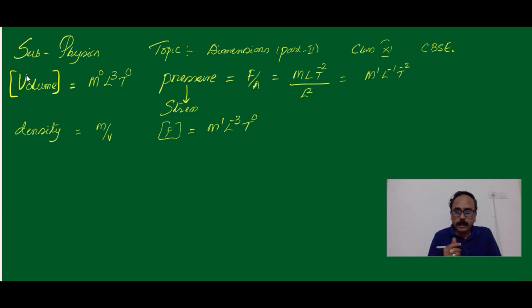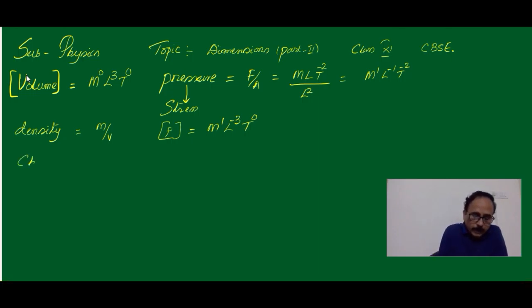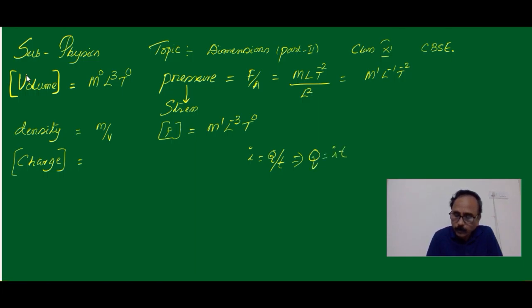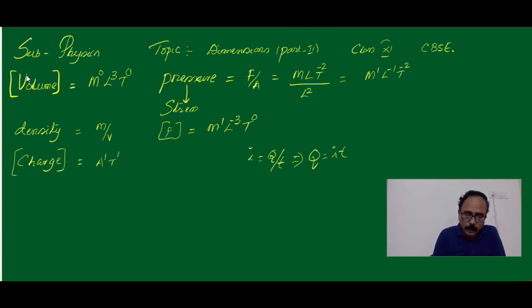Now let's write some physical quantities which involve the current. Let's write the Dimensional Formula for charge. From the definition of current, I is equal to Q by T. Therefore, charge is equal to I times T. For I we write A, for T it's time, then M0, L0.